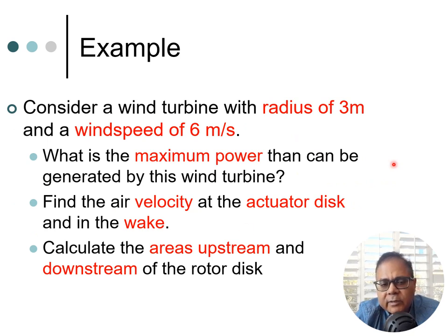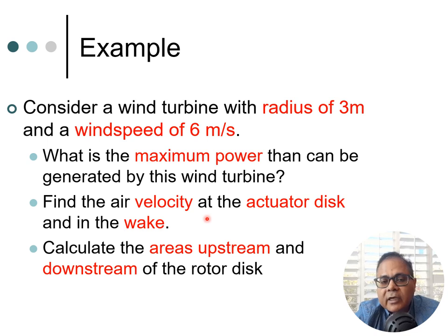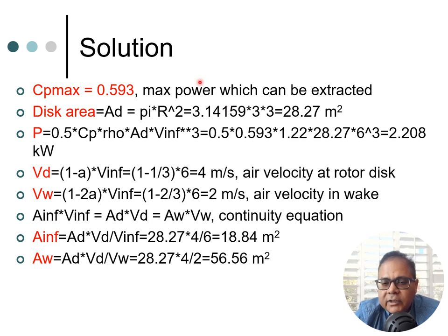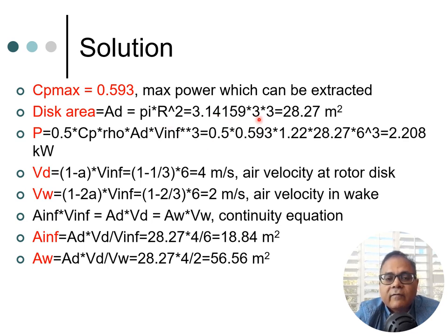Now let's work through an example. Consider a wind turbine with radius 3 meters and wind speed 6 meters per second. We want to find the maximum power generated, the air velocity at the actuator disk and in the wake, and the stream tube cross-sectional areas upstream and downstream. We take C_p max as 0.593 — the Betz limit. The rotor disk area is pi r squared equals pi times 3 squared equals 28.27 square meters. Power equals half times C_p times rho times A_d times u-infinity cubed.